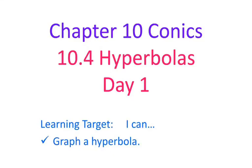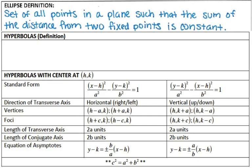Hi guys, here's the video going over chapter 10.4, graphing hyperbolas. So before we actually graph a hyperbola, let's talk about the definition. If you'll notice, I already have the definition of an ellipse written at the top. It's a set of all points in a plane such that the sum of the distances from two fixed points is constant.